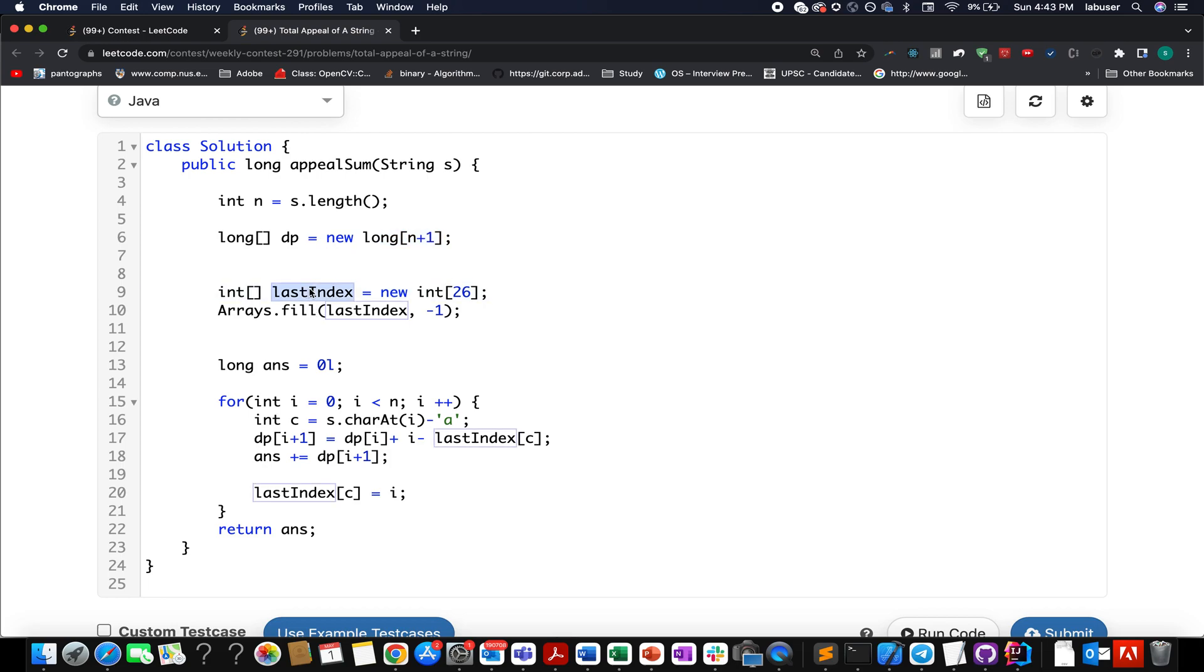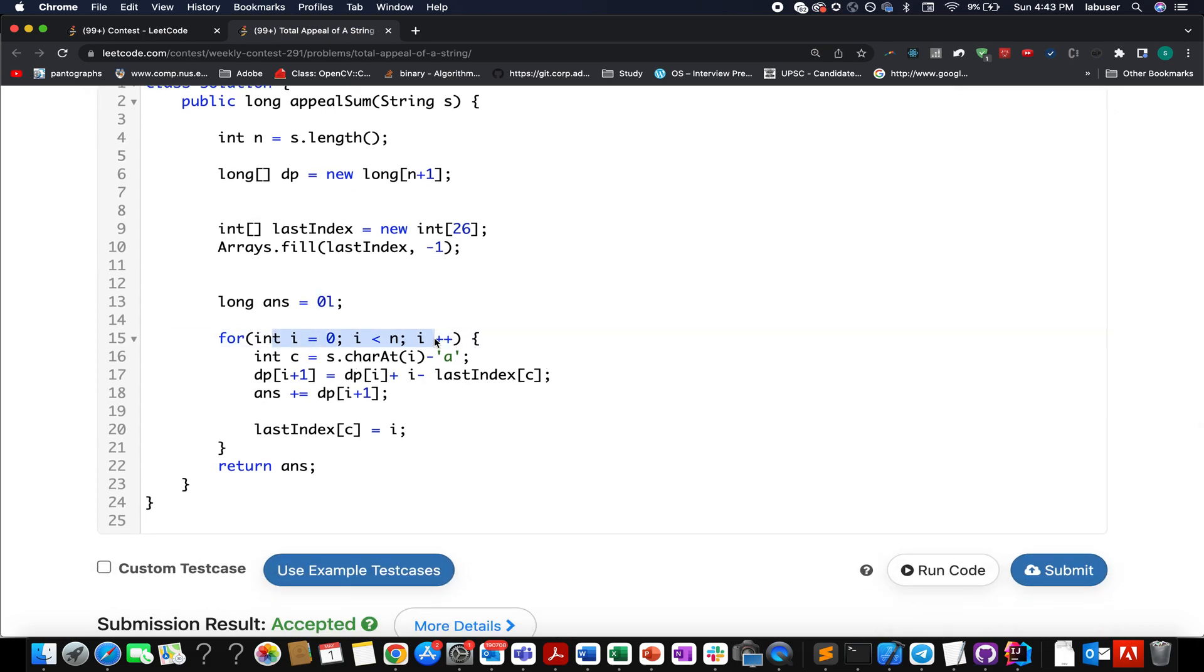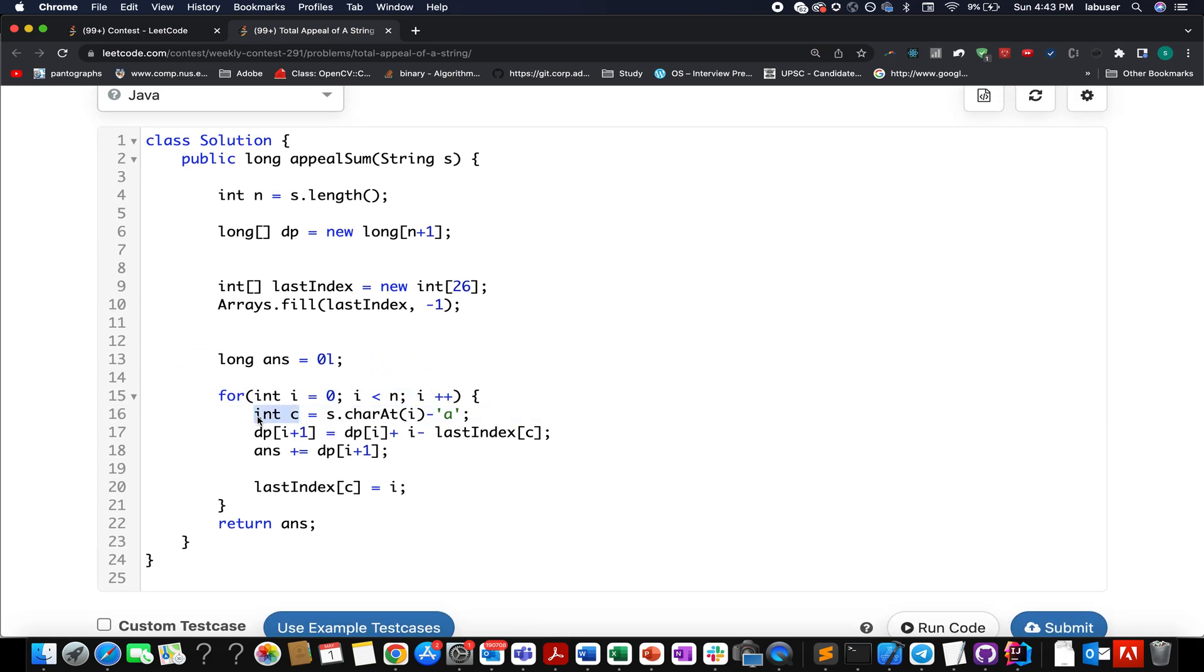Then I go ahead and create the last index array and then initialize to 26 size because it contains lowercase English characters. Then I go ahead and fill in with minus one values by default. I proceed in and create the answer variable; it is initialized to 0L. I iterate over my input string one by one. I extract the current character.